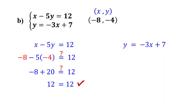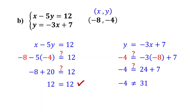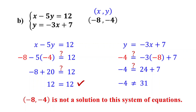Let's see now whether it works for the second equation. Replace x with negative 8 and y with negative 4. Negative 3 times negative 8 equals 24, and 24 plus 7 is 31. But negative 4 is not equal to 31, so it does not satisfy the second equation. Remember that for an ordered pair to be a solution to the system, it must satisfy both equations. Since the ordered pair (-8, -4) does not satisfy the second equation, it is not a solution to this system of equations.